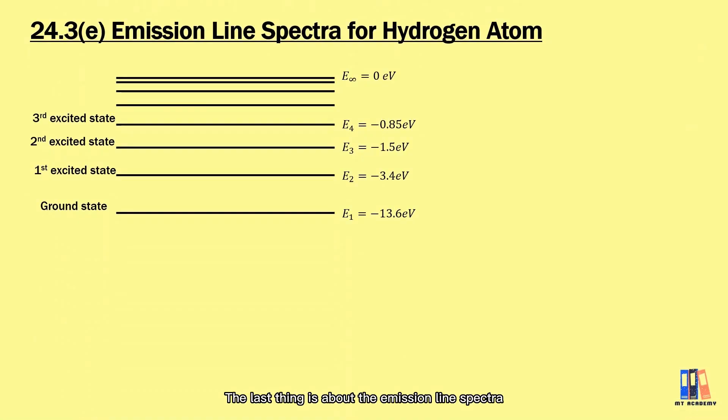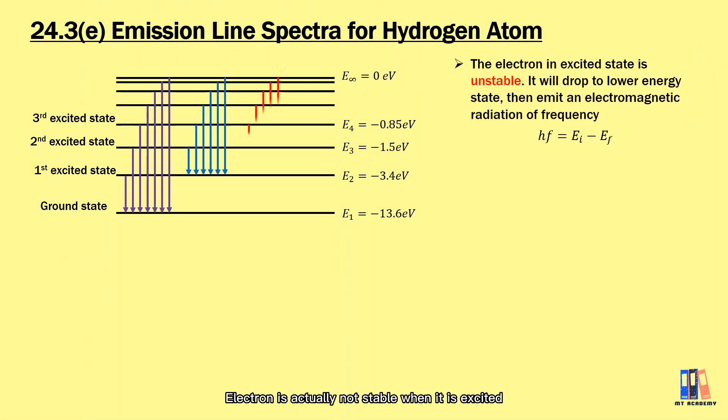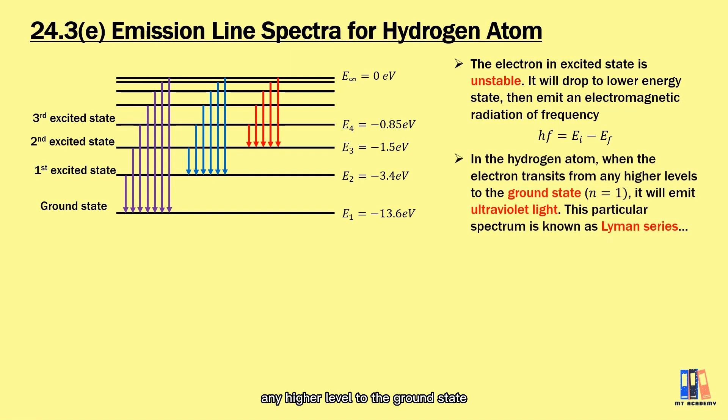So the last thing is about the emission line spectra, which we refer to hydrogen atom to conclude this topic. The electron is actually not stable when it is excited. It will eventually drop to ground state and emit electromagnetic radiation, where frequency is proportional to the difference between energy levels of transition. The emission of electromagnetic radiation can be categorized into field series, which depends on which state the electron transits to. For electrons that transit from any high level to the ground state, the frequency of photon emitted is in the range of ultraviolet, and those transitions are categorized as Lyman series. For those electrons that transit to first excited state where n equals 2, it is in visible light range, and it is categorized as Balmer series. For second excited state, it will be infrared range, and it is Paschen series.